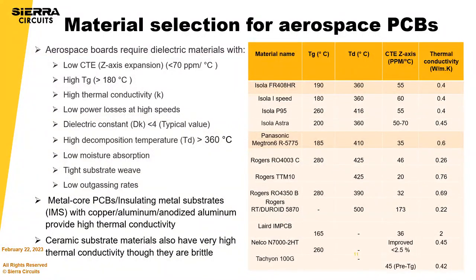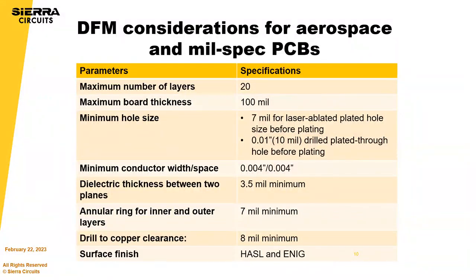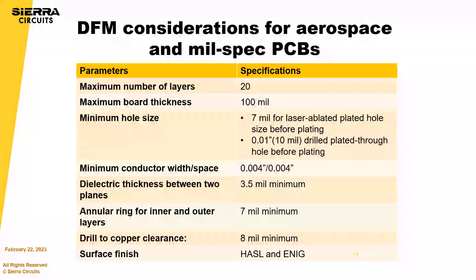In terms of DFM considerations for aerospace and no-spec PCBs, be very cognizant of the aspect ratio. The annular ring is always key in every design. Consider the copper weight you want — is it possible with the spacing requirements? You have to talk to your manufacturer about how they're going to build it. They can start with a thicker foil, etch through that foil, and then plate it up, and that would dictate your design rules.